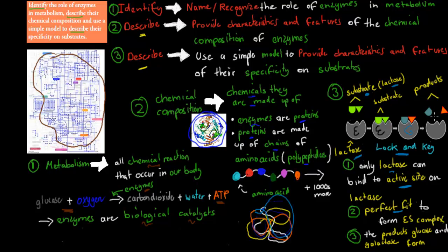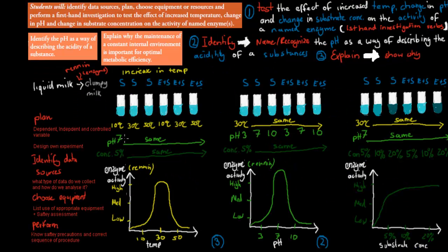The products are what comes out of the actual reaction — in this case, glucose and galactose. These two dot points are all related to the enzyme activity experiment. It says: test the effect of increased temperature, change in pH, and change in substrate concentration on the activity of a named enzyme. You also need to know your first investigation verbs for this one.